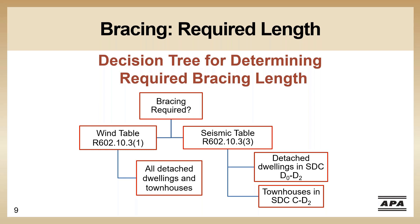This decision tree was introduced in a previous webinar. It's really a helpful first step when looking at a plan. The first question is whether we need to look at the seismic table. We're seismic design category C. For a single family detached dwelling in seismic design category C, you can ignore seismic. If this happened to be a townhome, we would have to look at seismic requirements as well as wind. As covered in part two, if you do have to look at seismic requirements, you do both wind and seismic, and the larger amount of bracing controls. But in our case — C, single family — we can ignore seismic.